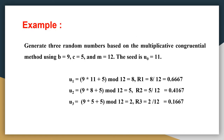Let's see an example. The question is to generate three random numbers based on the multiplicative congruential method. We are given the values b = 9, c = 5, and m = 12. Also, the seed variable u0 is initialized as 11. We are required to find out three random numbers using the multiplicative congruential method. The equation to implement the multiplicative congruential algorithm is: un = (b × u(n-1) + c) mod m.